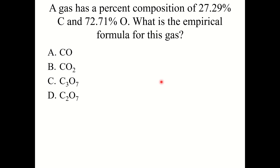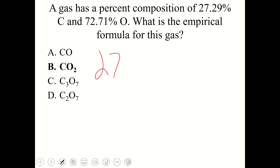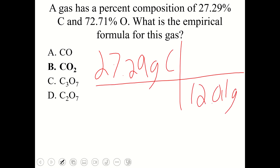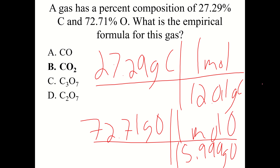Knowledge check: A gas has a percent composition of 27.29% carbon and 72.71% oxygen. What is the empirical formula? The correct answer is CO2. Assume a 100 gram sample: 27.29 grams carbon, converted to moles using carbon's molar mass; and 72.71 grams oxygen, converted to moles using oxygen's molar mass. Write the chemical formula and divide by the smallest number to get CO2.